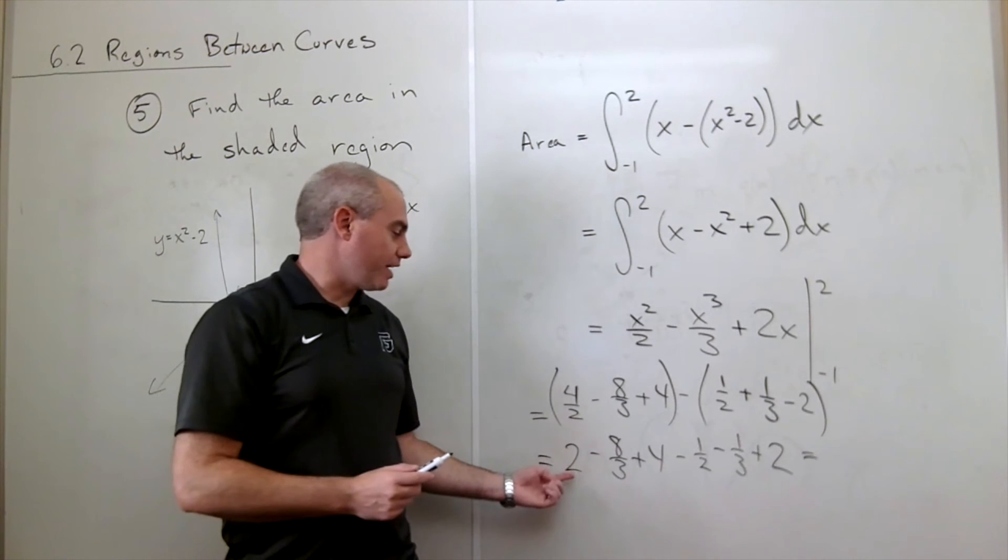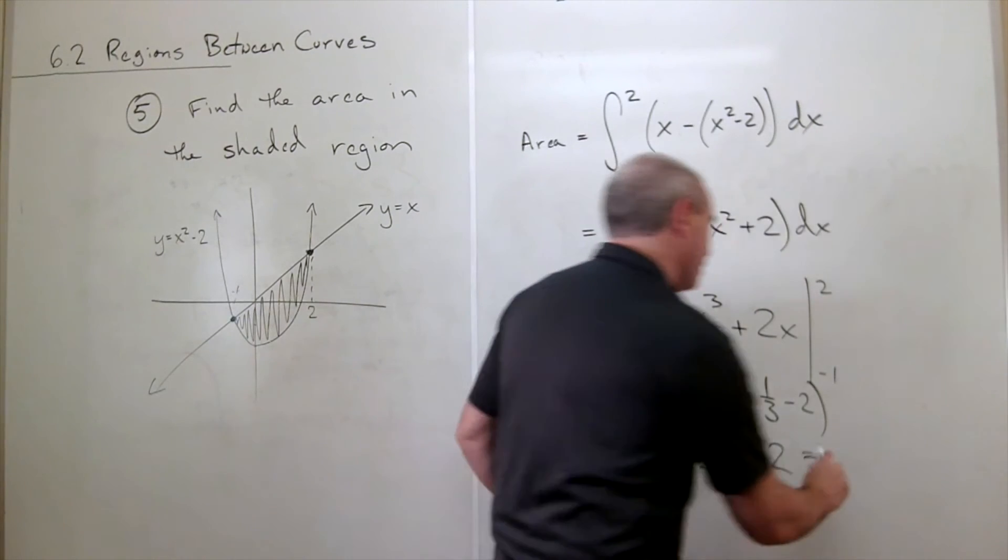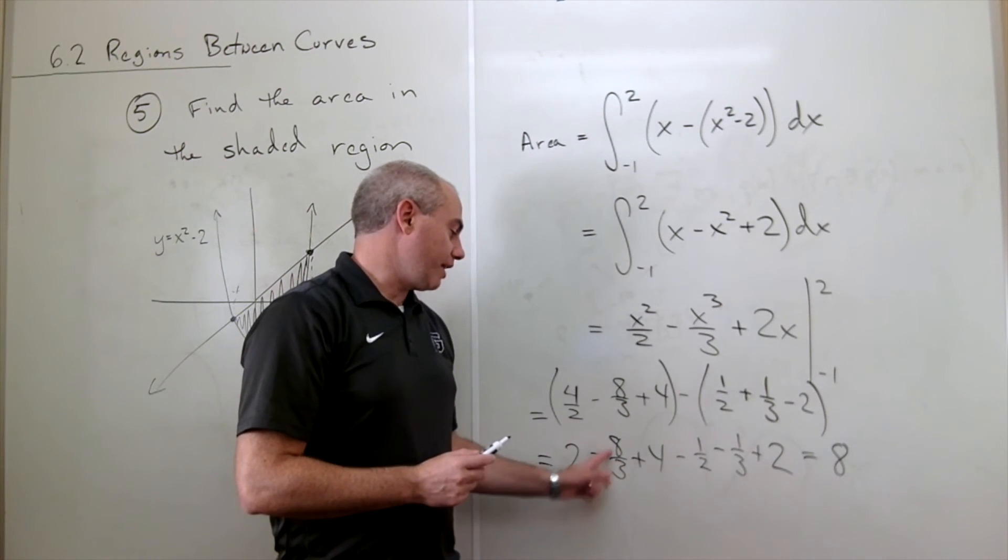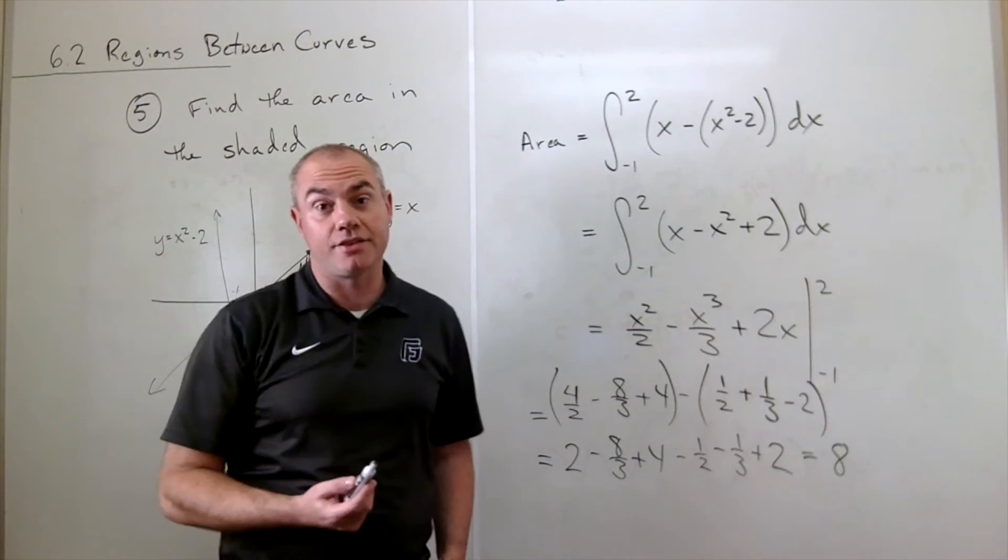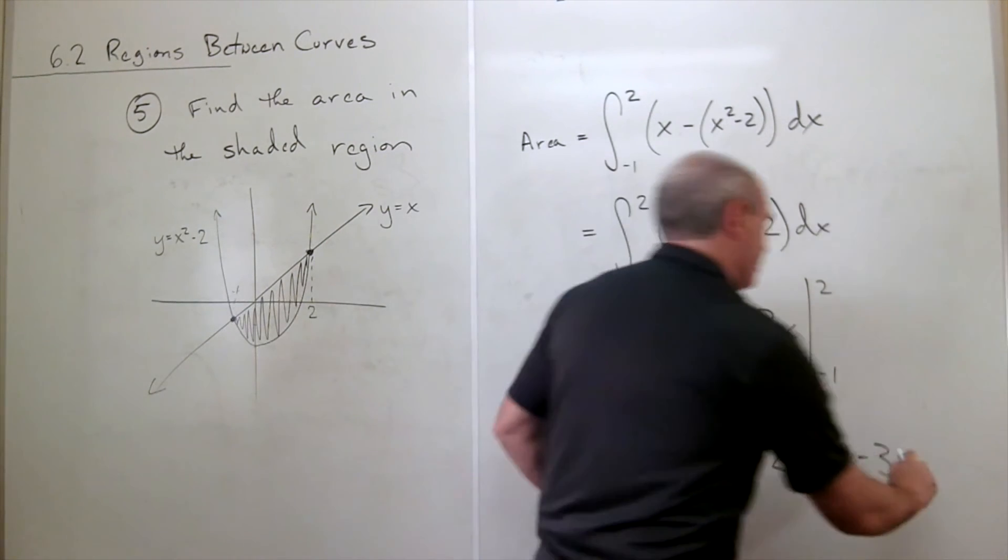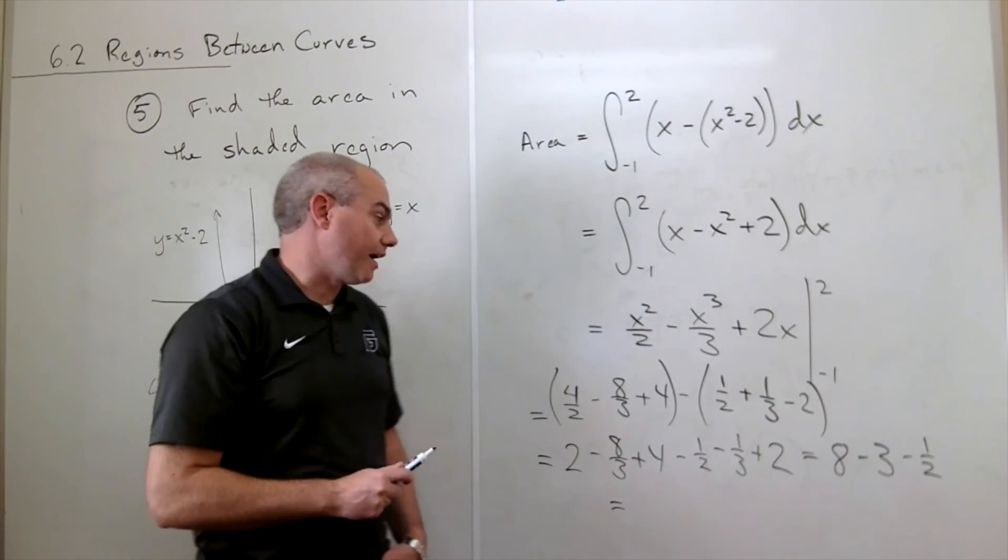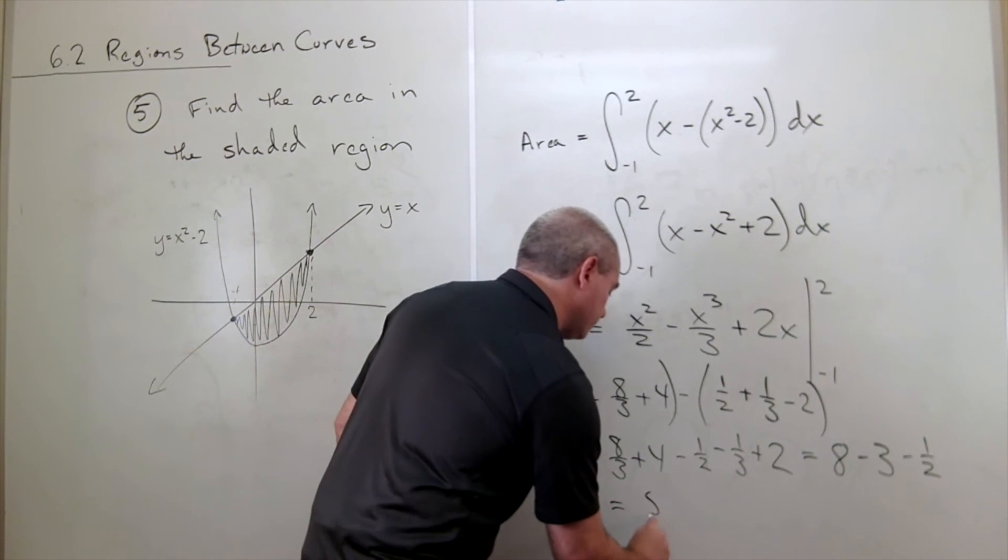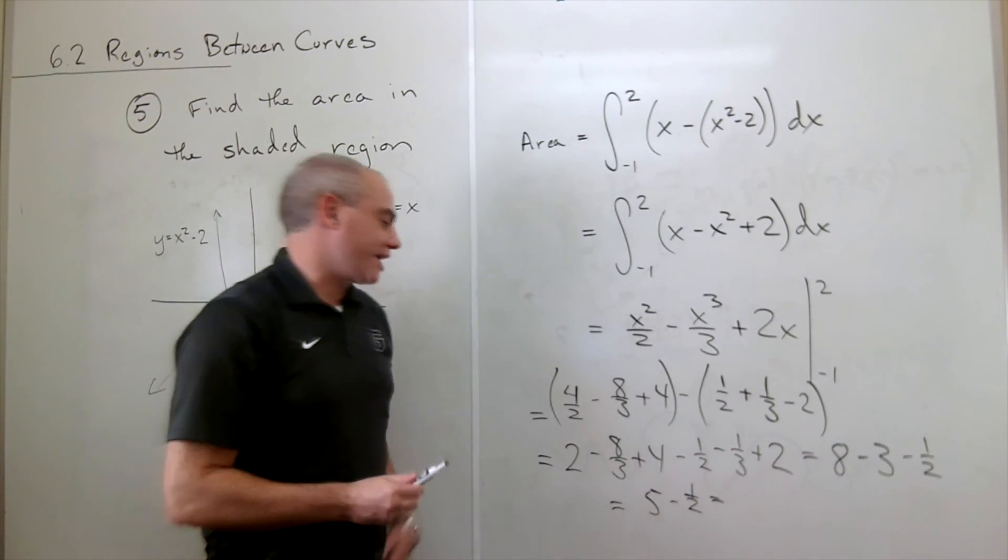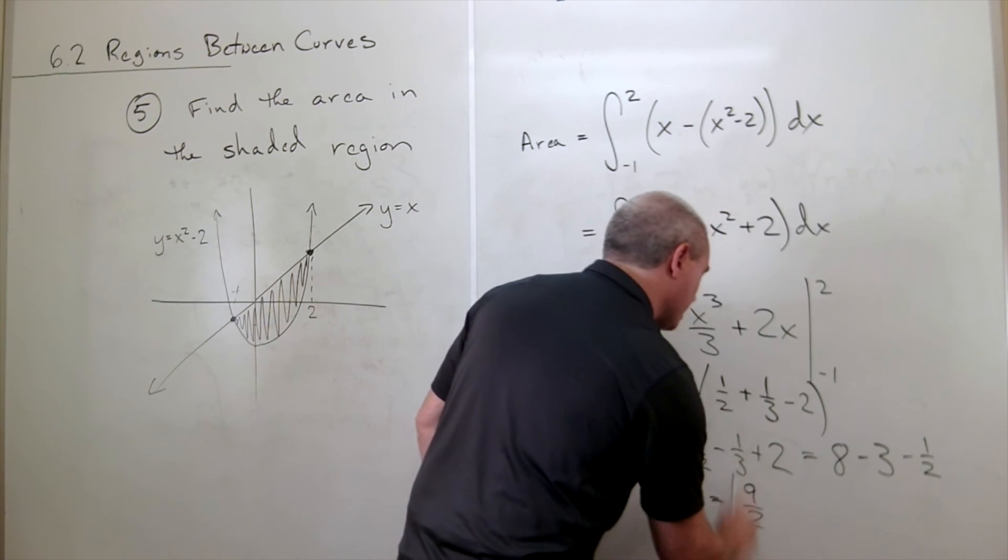We're close here. First, I'll just combine together all of the constants. So I've got a two plus a four plus a two, which is eight. And then I can combine all together all the thirds. I've got negative eight-thirds minus an additional third is minus nine-thirds or minus three. And then I've got this minus a half. In other words, I have five minus one-half. And five minus a half, five is the same as ten-halves minus one-half is nine-halves.